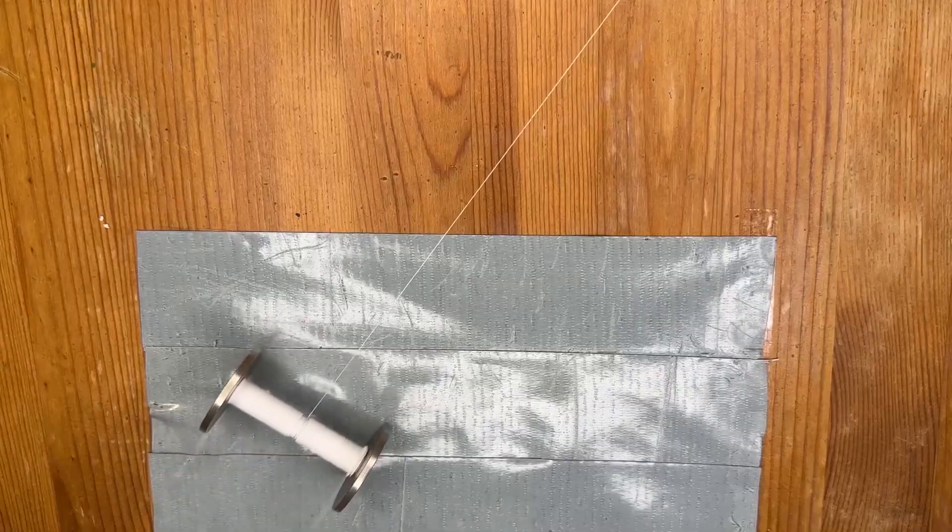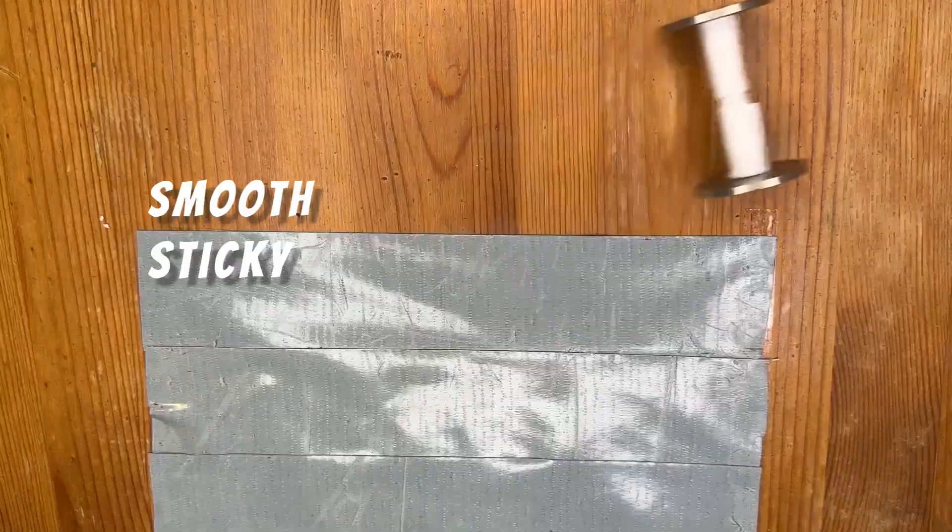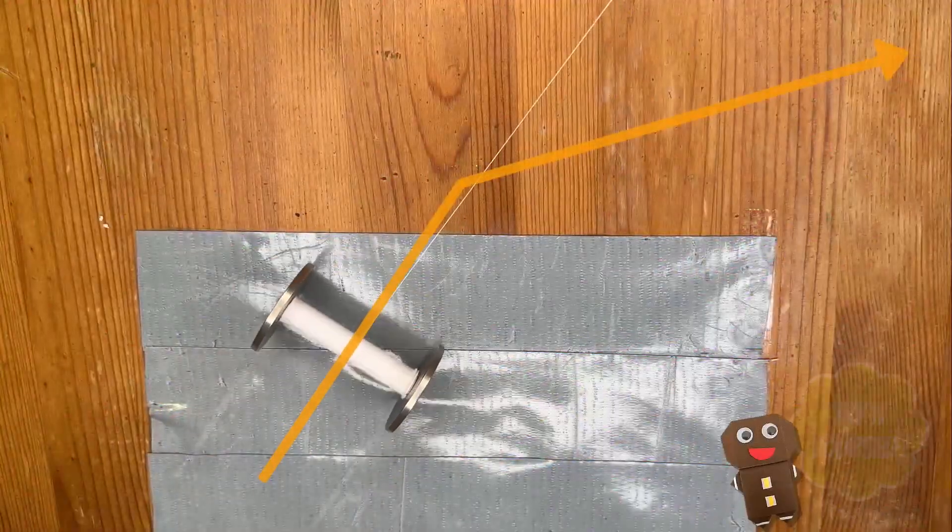Here's a physical way to see it in action. As these wheels go from the sticky tape to the smooth table, their path naturally bends, following the path of least time.